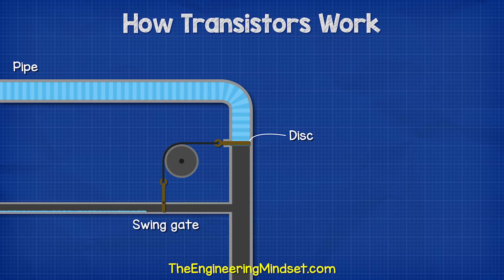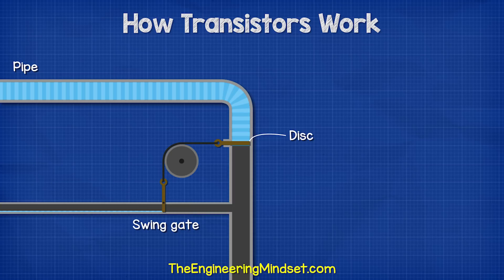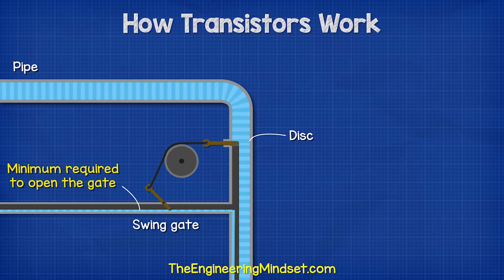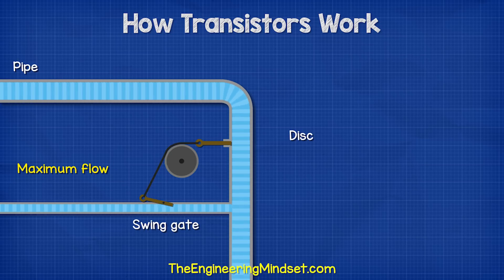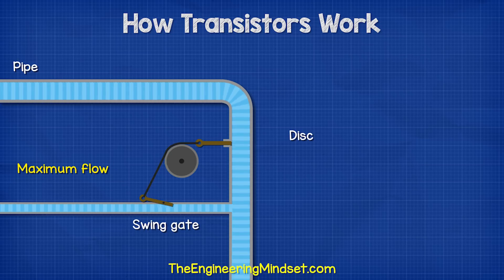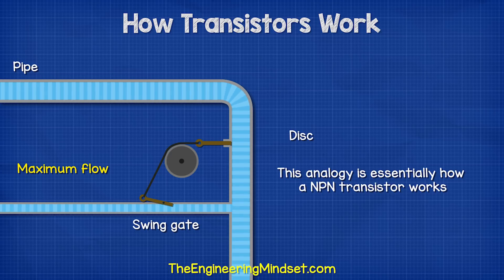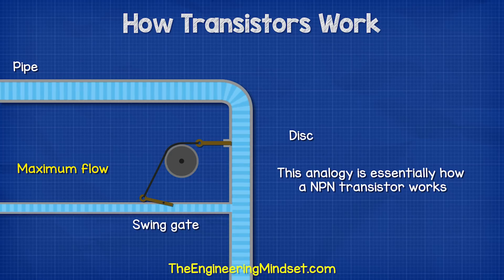The swing gate is a little heavy, so a small amount of water won't be enough to open it. A certain amount of water is required to force the gate to open. The more water we have flowing in this small pipe, the further the valve opens and allows more and more water to flow in the main pipe. This is essentially how an NPN transistor works.